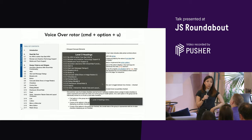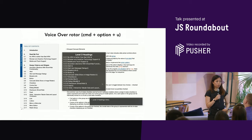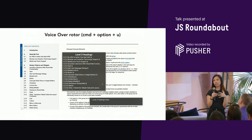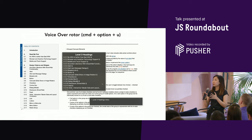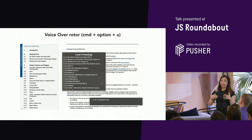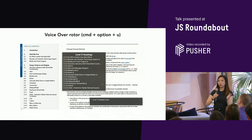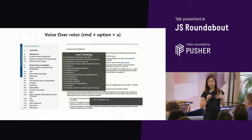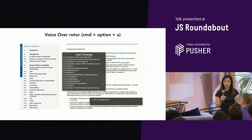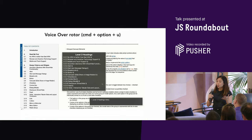When you hit Command+Option+U on VoiceOver, you pull up a set of shortcuts categorized into groups, one of which is headings. You can browse by heading levels — level 1, level 2, level 3 — and this corresponds to the h tag you've used.